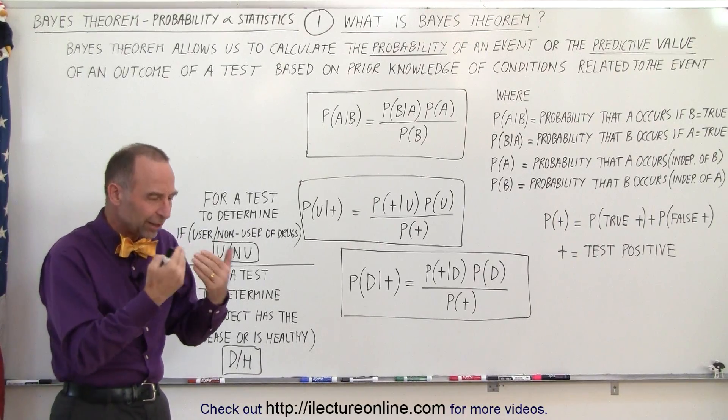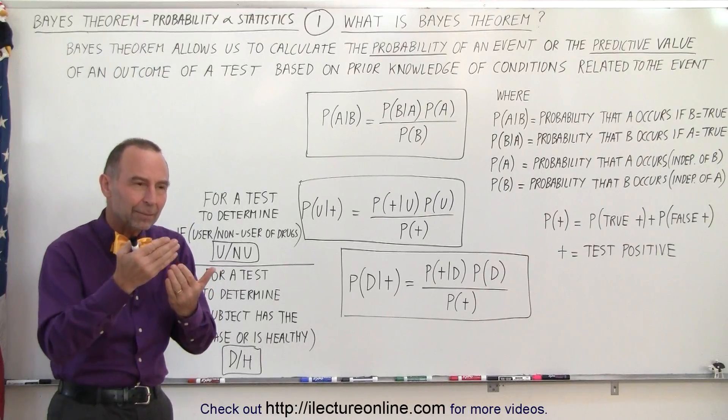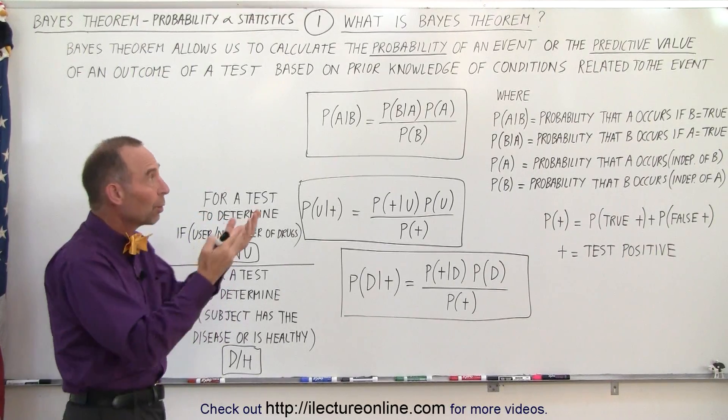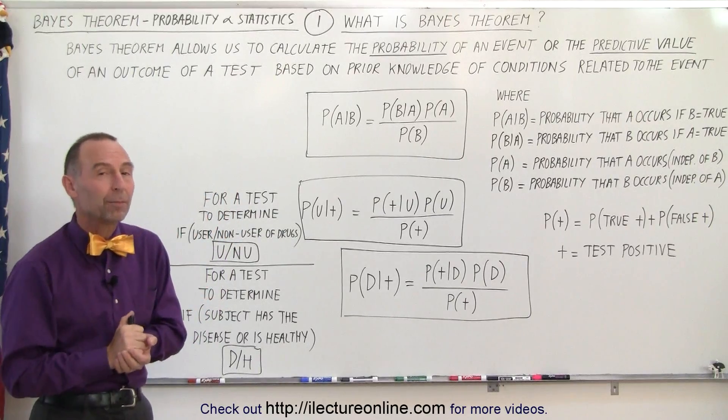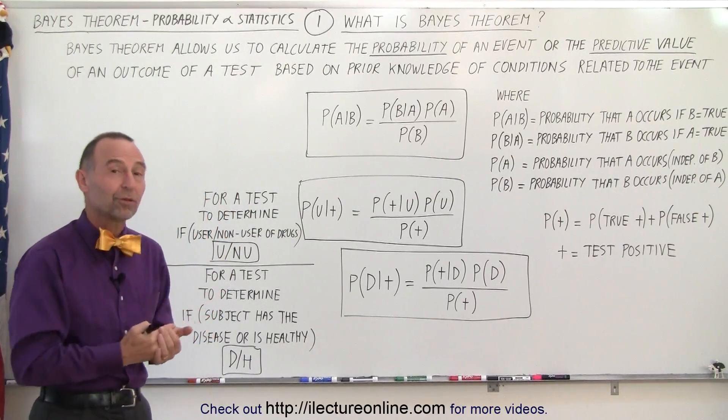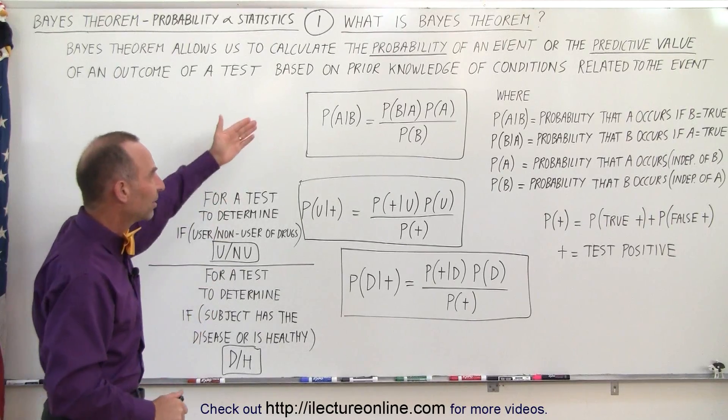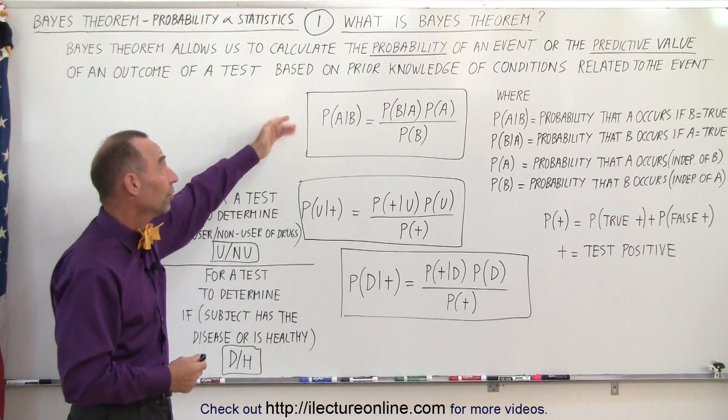So it is calculating the probability of a particular outcome and what that probability will actually mean, what we call the predictive value of that probability. And of course we're going to show you some examples to help us understand a little bit more what it is. But the basic equation of Bayes' Theorem is as follows.